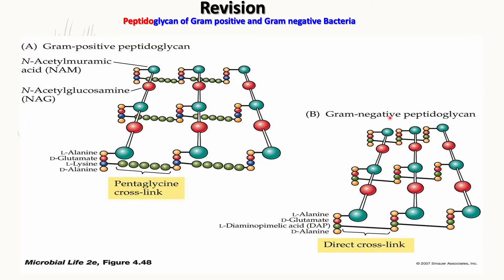For gram-negative peptidoglycan, we have the same NAM in green and NAG in red, with a peptide bond of L-alanine, D-glutamate, L-diaminopimelic acid (DAP) — whereas gram-positive has L-lysine — and D-alanine. In gram-negative bacteria, the two layers are connected by a direct cross-link rather than a pentaglycine cross-link.